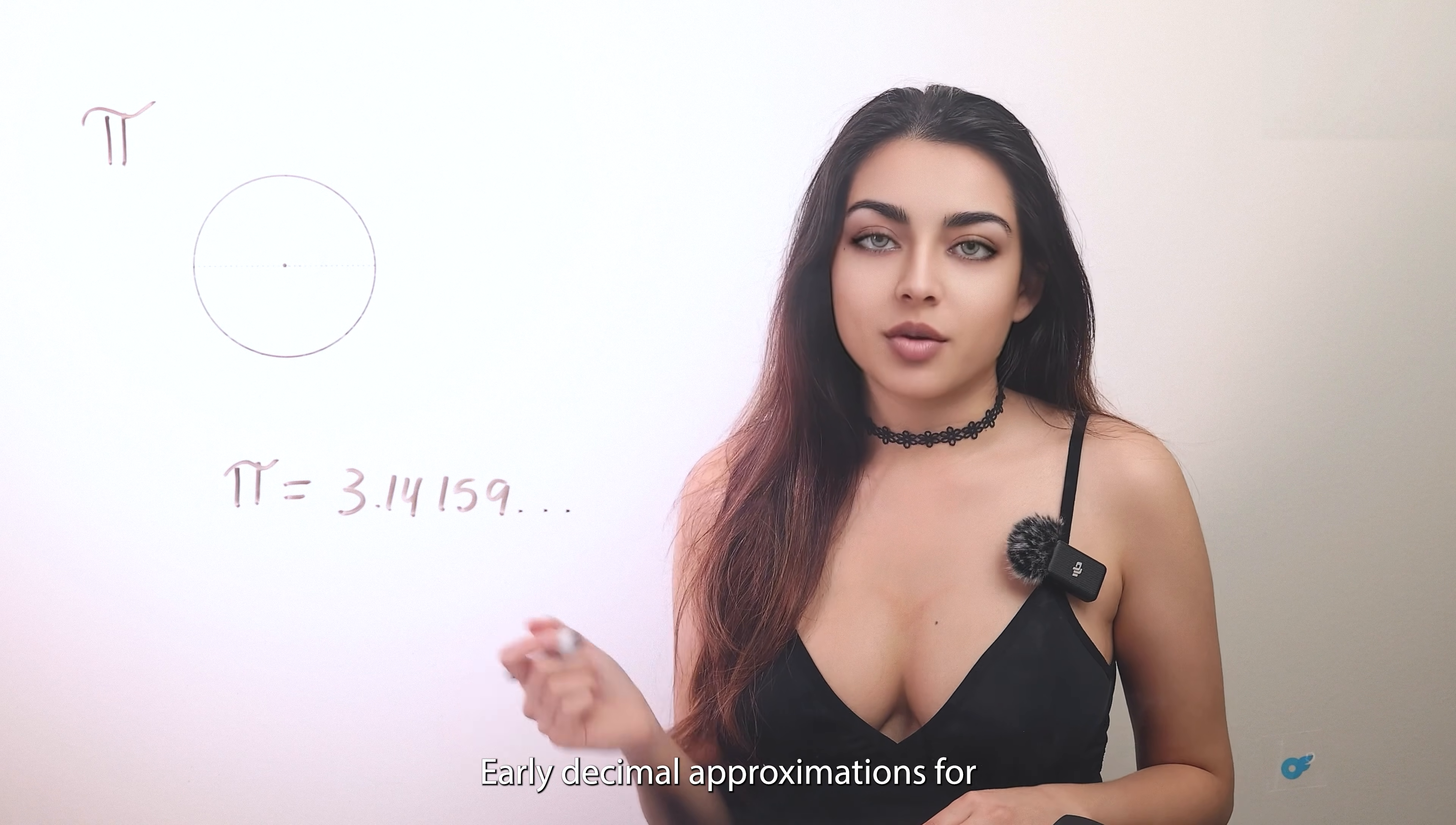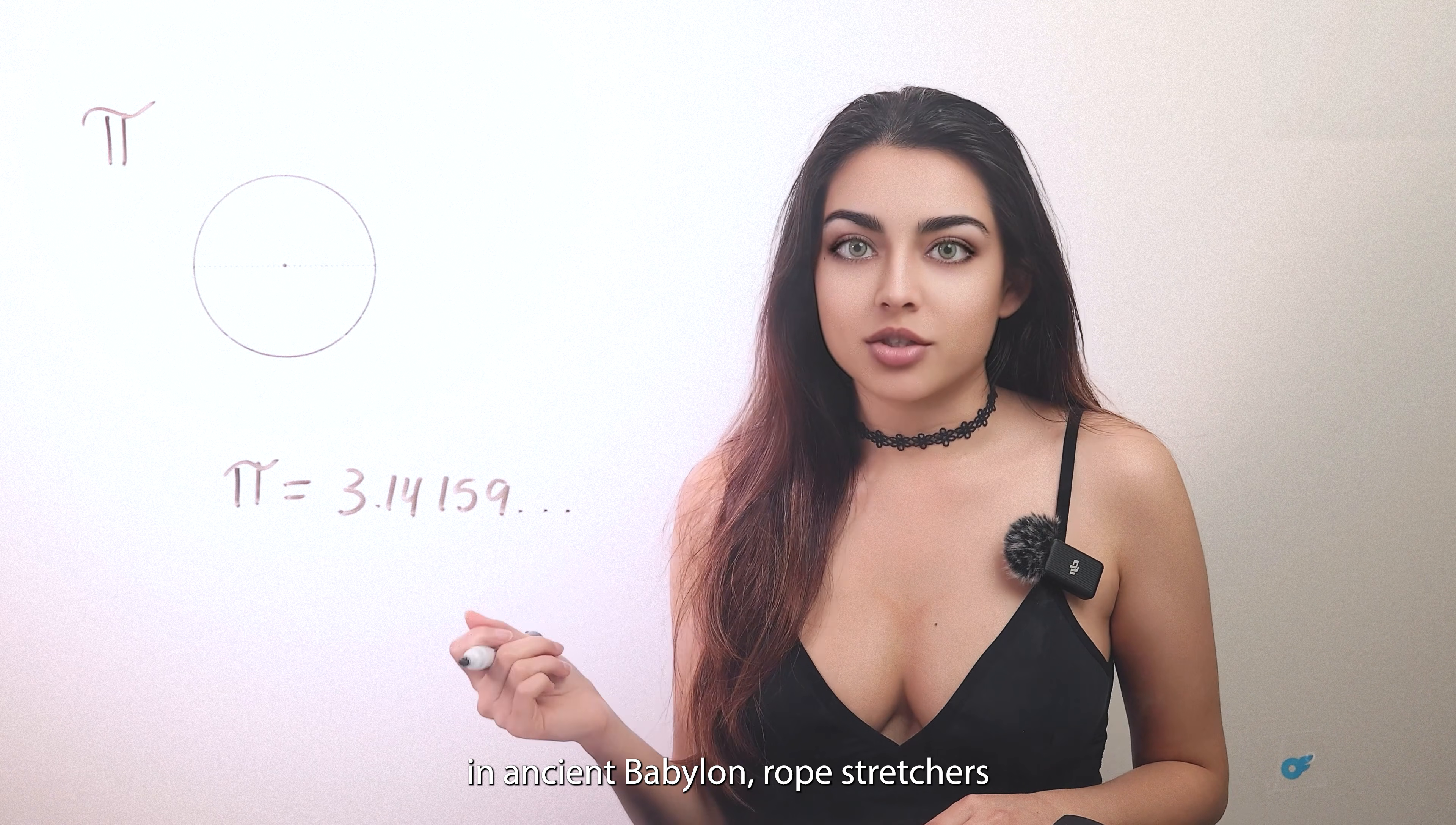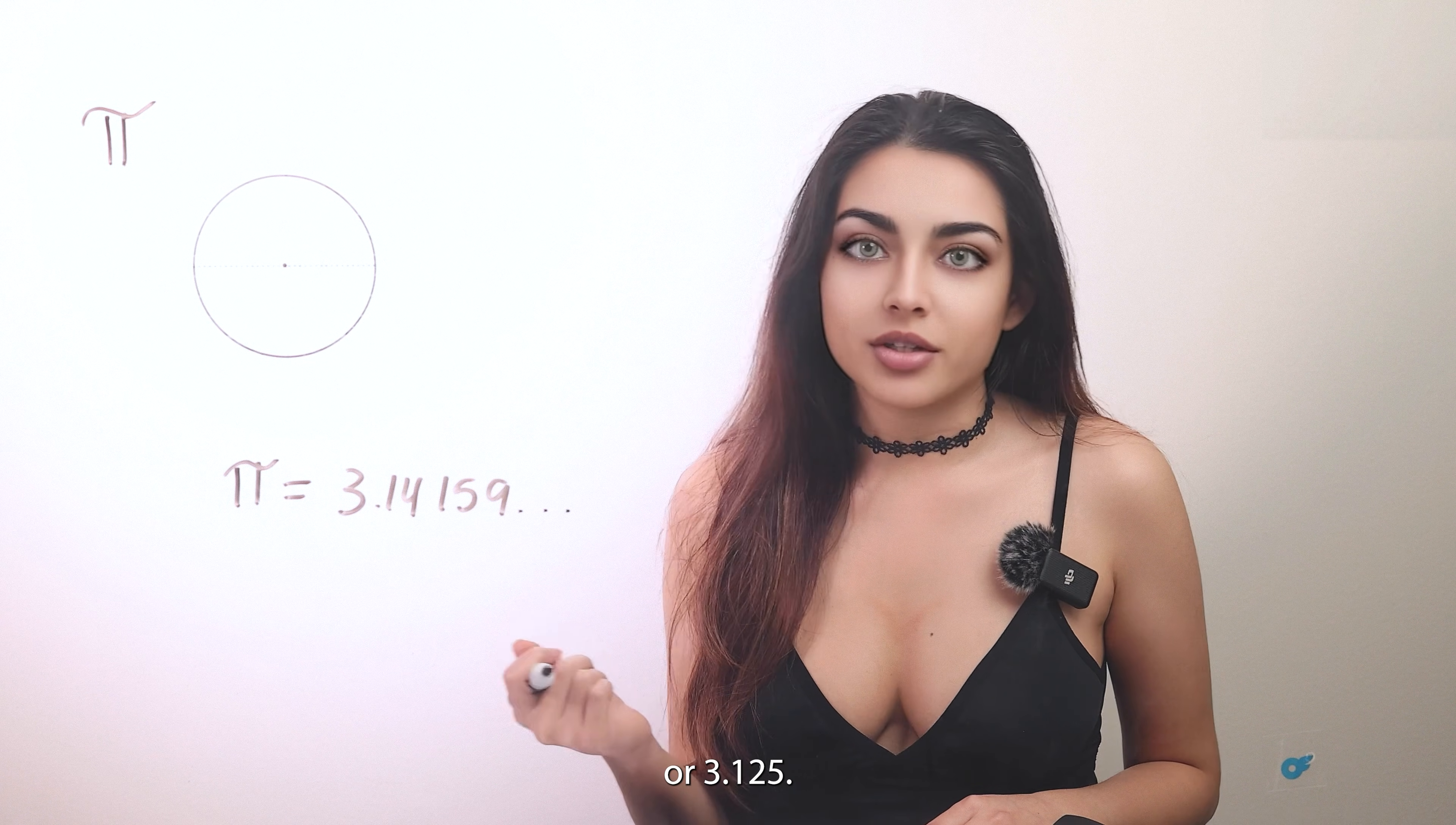Early decimal approximations for pi were obtained in a number of different ways. For example, in ancient Babylon, rope stretchers marking the locations of buildings and boundaries estimated pi to be 25 over 8 or 3.125.